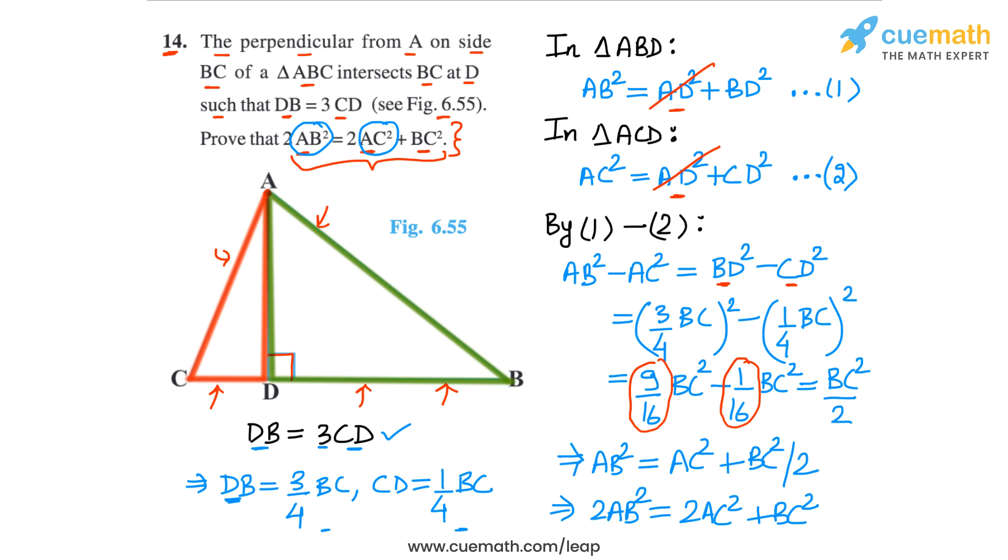If you observe the problem statement, this is what we had to prove. On the left side we had 2AB square. On the right side we wanted to get 2AC square plus BC square. This completes our proof for question number 14.